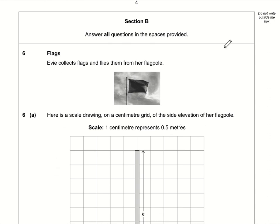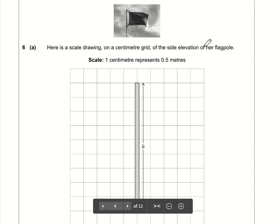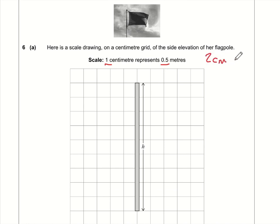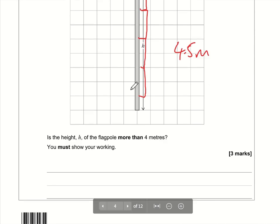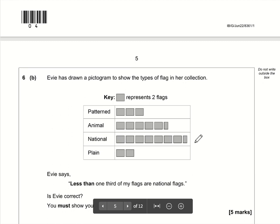Okay so on to question six section B. The key thing here is that the scale one centimeter represents 0.5 meters. What that means is that two centimeters equals one meter. So here we've got one meter, two meters, three meters, four meters and half a meter. So in total that is 4.5 meters in real life, and the question is it more than four meters? Well we can say yes because 4.5 is greater than four.